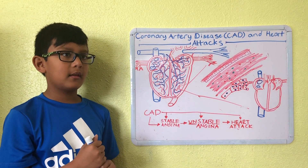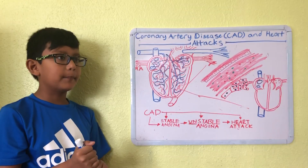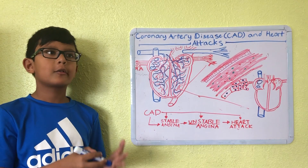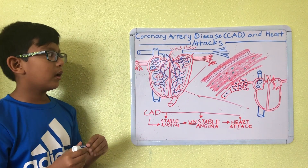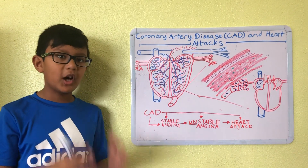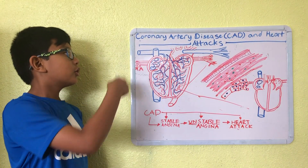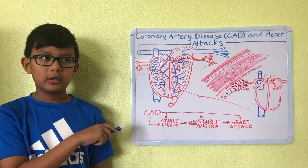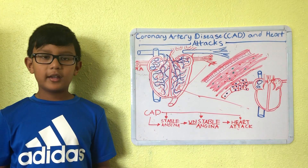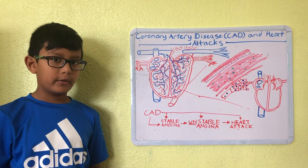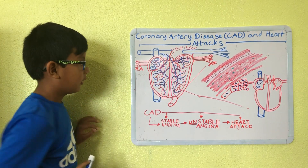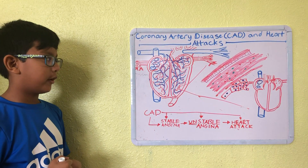These vessels right here are called coronary arteries and veins. They're the veins and arteries that supply blood to the heart. The heart is a muscle — it's pumping 100,000 times a day. So these arteries have to supply blood to the pump, the heart. But these coronary arteries can get diseased themselves, and we call this coronary artery disease.